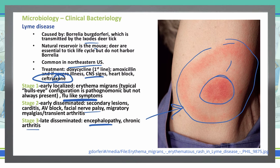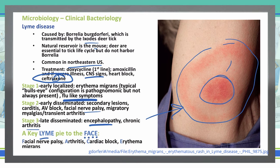A way to remember Lyme disease and its key aspects is: you get a key Lyme pie to the FACE. F is facial nerve palsy, A is arthritis, C is cardiac block, and E is erythema migrans — that characteristic bullseye rash.